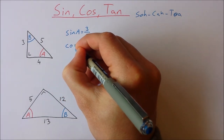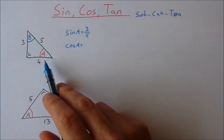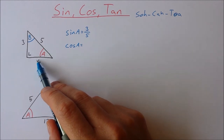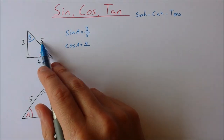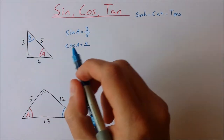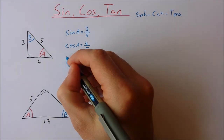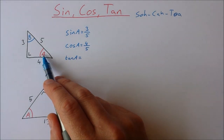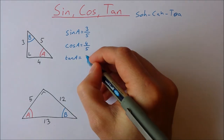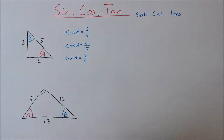Cos of A — cos is equal to adjacent over hypotenuse. Here's A; the adjacent side is 4, over the hypotenuse which is 5. And then tan of A is the opposite over the adjacent — opposite to A is 3, adjacent to A is 4, so tan A equals 3 over 4.